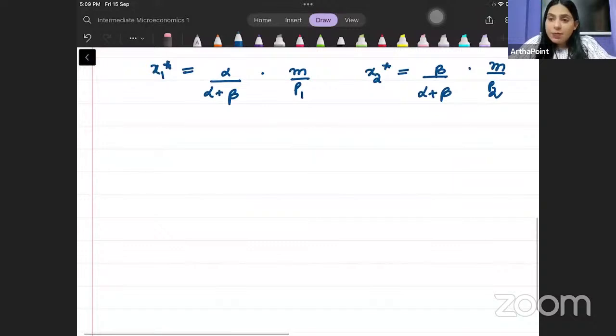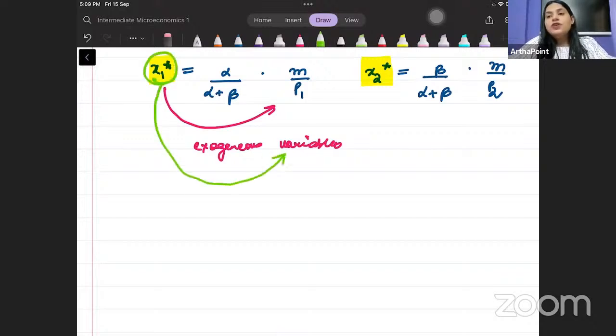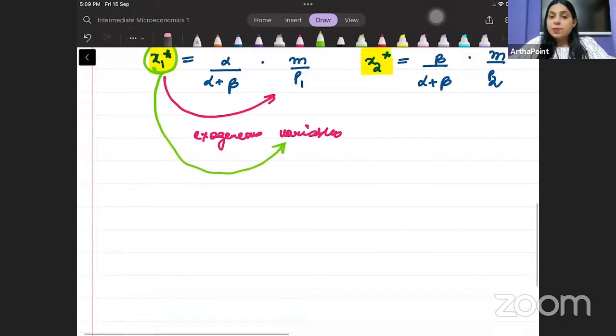So Beta, what do we see in this case? We are able to see that the demand of the two goods, it is a function of the exogenous variables. It's a function of exogenous variables. So Beta, what are we seeing? We are seeing that the endogenous variable demand is a function of the exogenous variables.